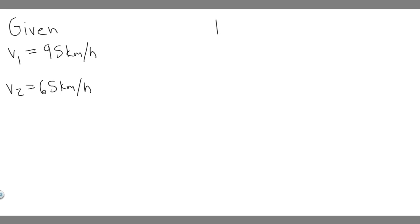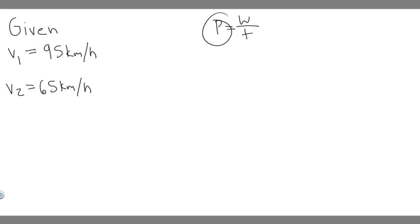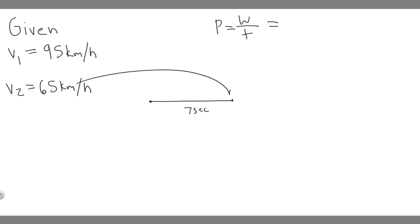We're trying to find power. You can find power using the formula: power equals work over time. So if you have work and divide it by the amount of time it takes, you can find power. The car starts at 95 km/h and slows to 65 km/h over seven seconds, so the time is seven seconds.